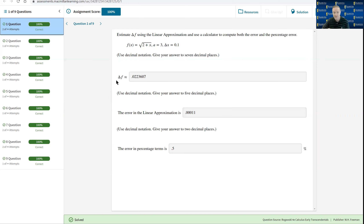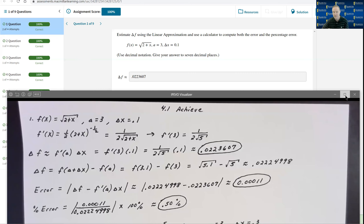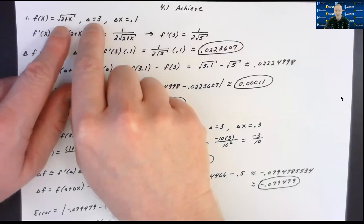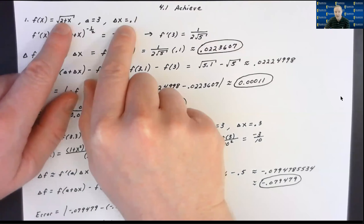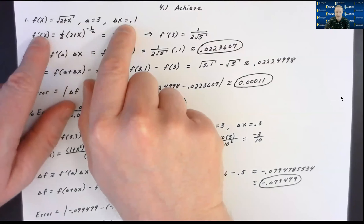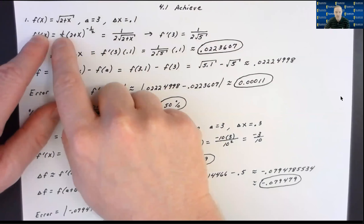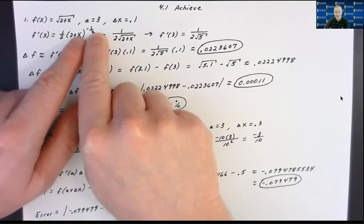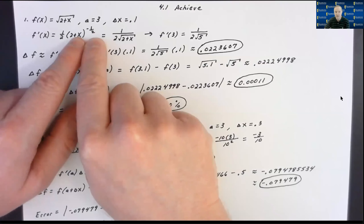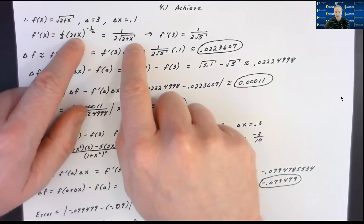First, they're asking us to find an approximation for the change in the y values, then they want the error in that approximation, and then the percentage error. In order to find the approximation, I took the derivative. I thought of f(x) as (2+x)^(1/2), so its derivative is (1/2)(2+x)^(-1/2) times the derivative of the inside, which is 1. This simplifies to 1 over 2√(2+x).